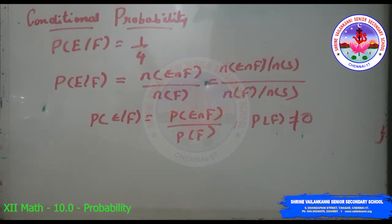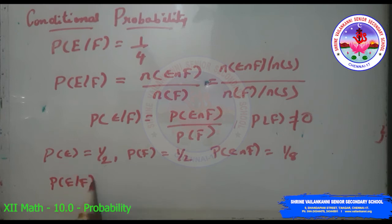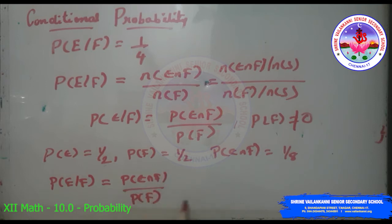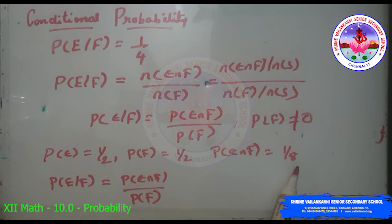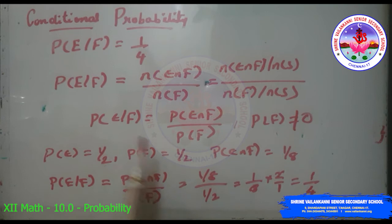Finding the conditional probability of the example: P(E|F) = P(E∩F) / P(F). When tossing 3 coins, P(E) = 1/2, P(F) = 1/2, P(E∩F) = 1/8. Substituting: (1/8) ÷ (1/2) = 1/8 × 2/1 = 1/4. So P(E|F) = 1/4.